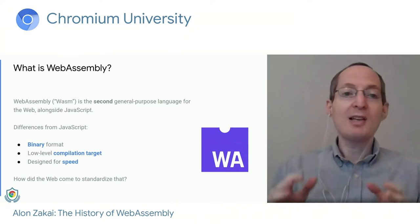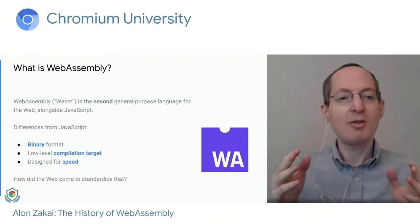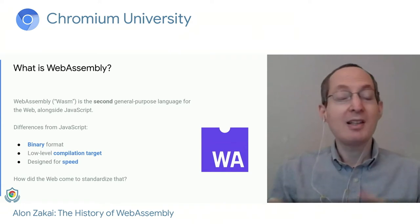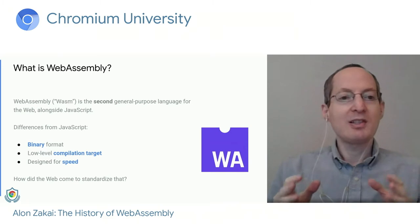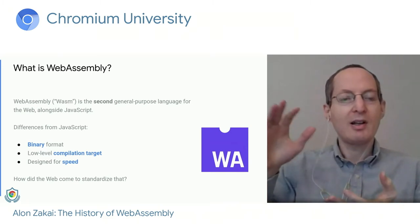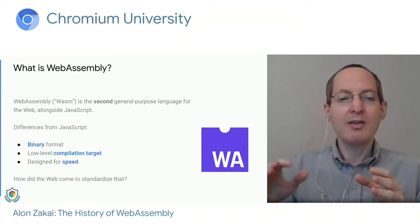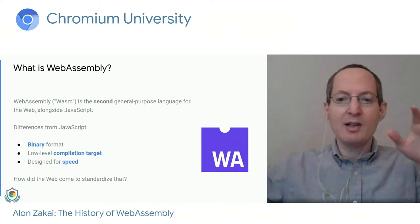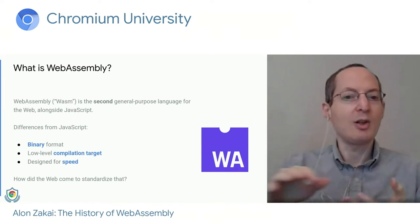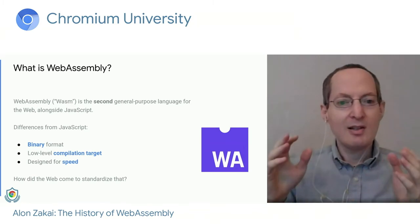WebAssembly, or WASM, is the second general purpose language for the web. The web has had JavaScript for a long time and we've added WebAssembly alongside it — that's kind of a big deal because there's just two of them and we didn't lightly add a second one. WebAssembly is interesting because it's pretty different from JavaScript. It's a binary format, so it's more compact and downloads more quickly. It's a compilation target, something you typically don't write by hand. Rather, you write some other language and compile down to WebAssembly, which is very low level, and it's designed for speed.